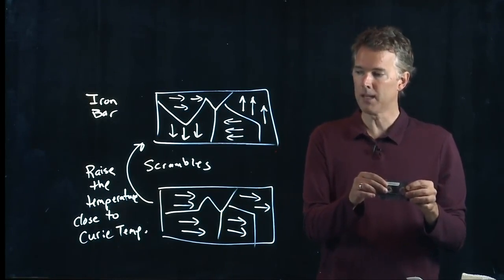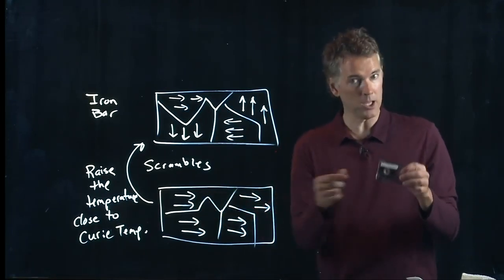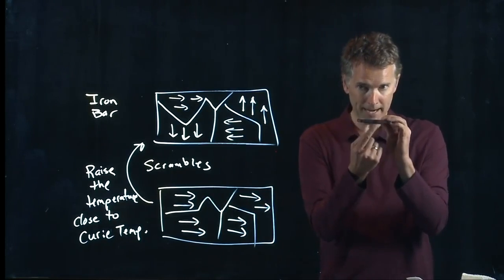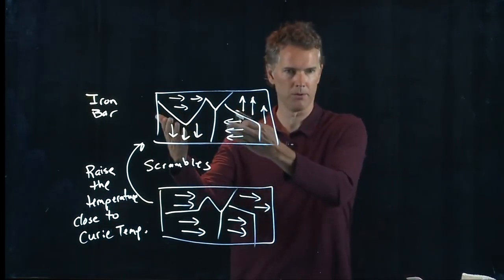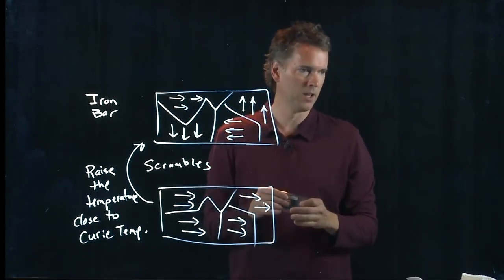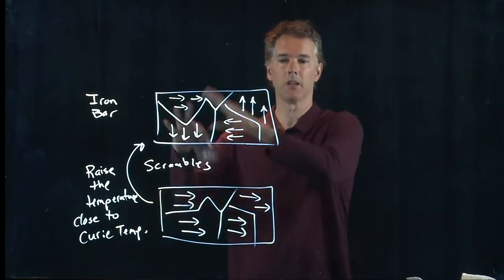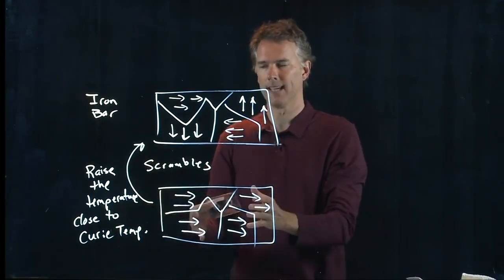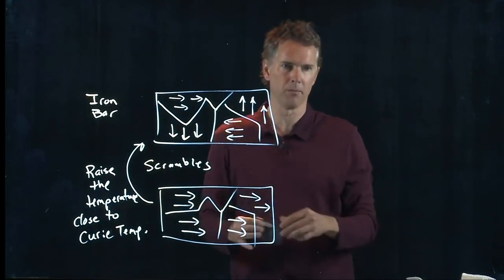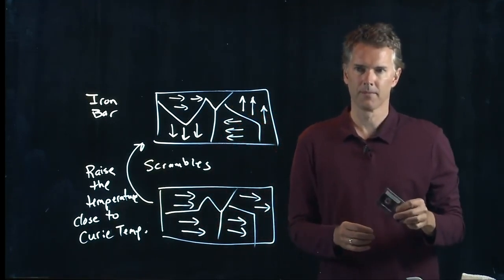And that's because all the information that used to be on your little magnetic strip got really hot and got scrambled and went back to something like this. If it really hits the Curie temperature then it completely destroys the information. But if it's just getting hotter it will start to scramble the information.